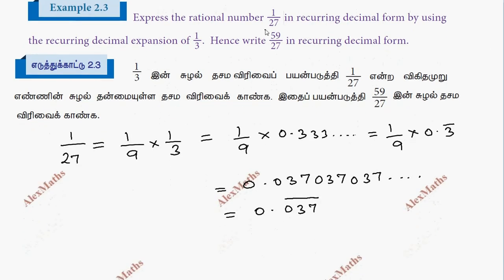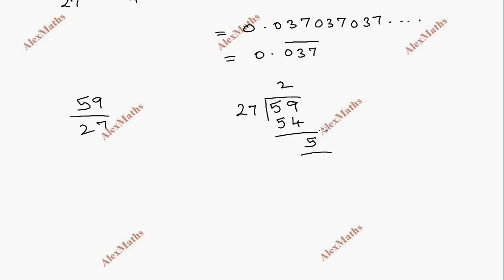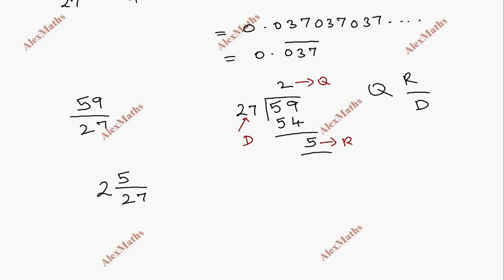Now for the number 59 by 27 in the recurring decimal form. So 59 by 27 is the original value. We will divide: 59 divided by 27. Using the formula division is quotient times divisor plus remainder, 59 divided by 27 is 2 remainder 5 divided by 27.